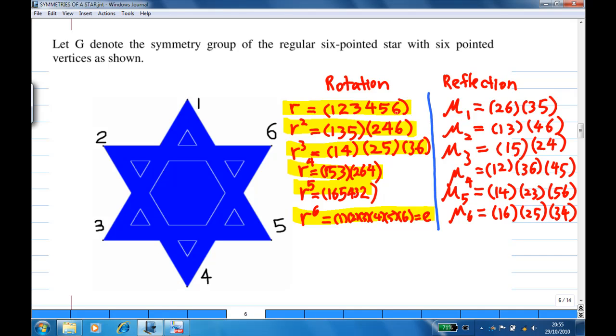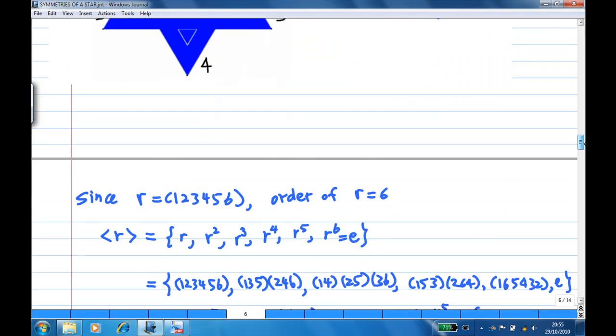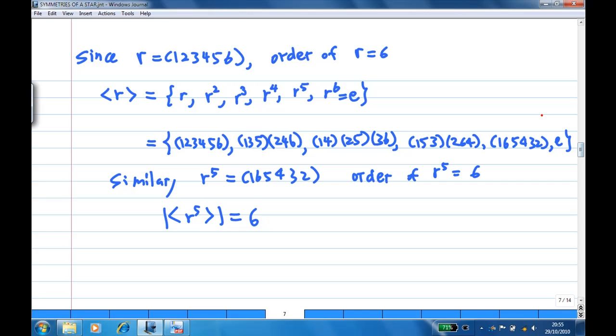For example, if I take R, which is (123456), then the order of R is 6, since R is a 6-cycle. Then, the cyclic subgroup generated by R consists of R, R^2, R^3, R^4, R^5, R^6 which is E. Now, that is actually the entire rotation group.